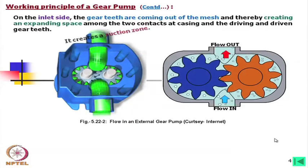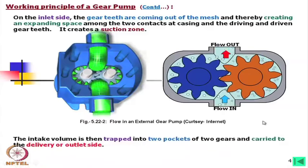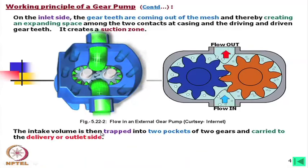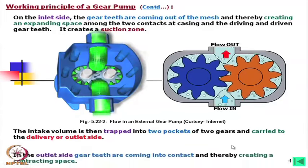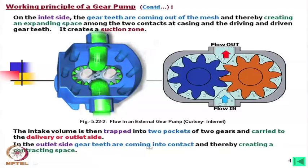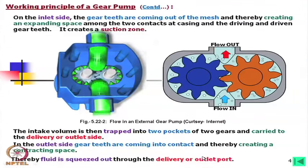It creates a suction zone on the inlet side. An intake volume is then trapped into two pockets — one pocket from each gear — and carried to the delivery or outlet side. On the outlet side, gear teeth are coming into contact, thereby creating a contracting space. Thereby, fluid is squeezed out through the delivery or outlet port. This is the pumping action in the case of a gear pump.